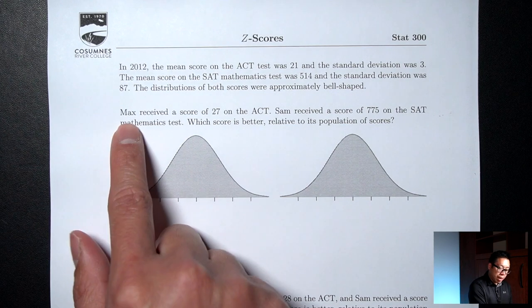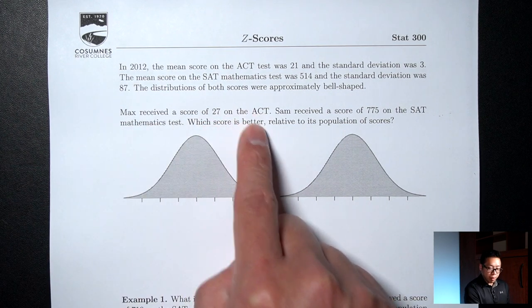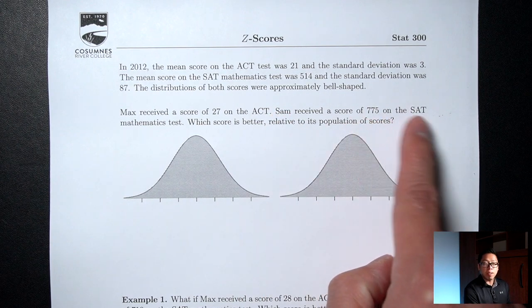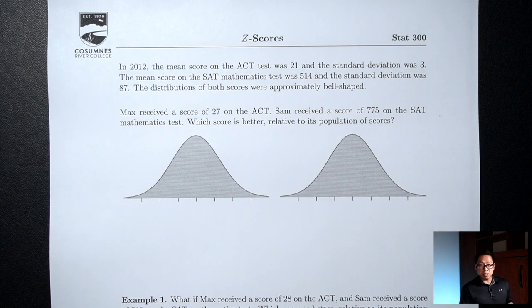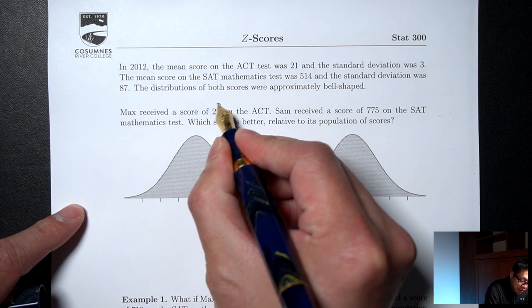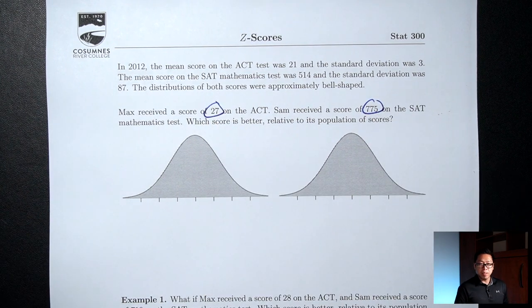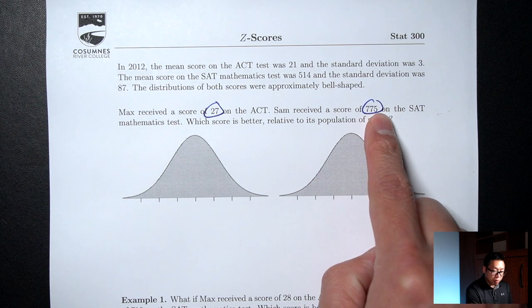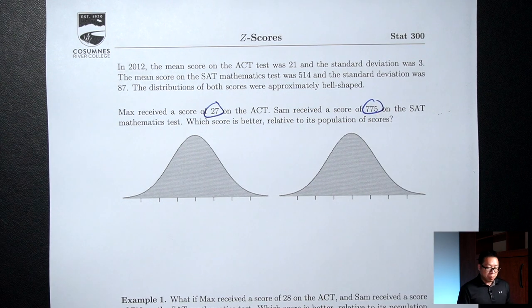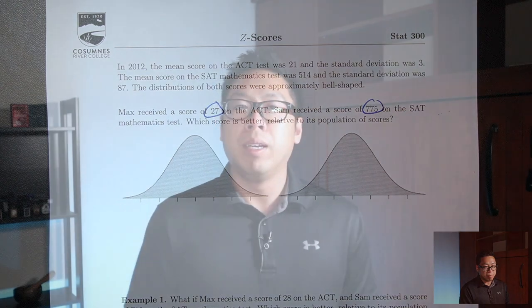The situation we have here is Max got a 27 on the ACT, and Sam got a 775 on the SAT Math. The question is, which one is better — 27 on the ACT or 775 on the SAT Math? Can we say that 775 is better because it's bigger? No, because these are two different tests graded on two different scales, so we can't just compare them directly. It's like asking who's better, Steph Curry or Shaun White? These are two different athletes playing two different sports.